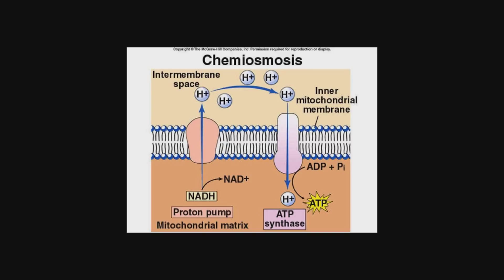And this is accomplished through an intermembrane protein known as ATP synthase. ATP synthase harvests the kinetic energy from the diffusion of hydrogen ions through it to the mitochondrial matrix and generates ATP through oxidative phosphorylation. And what's important to note is that with oxidative phosphorylation, the ATP was created from the energy of the electrons.